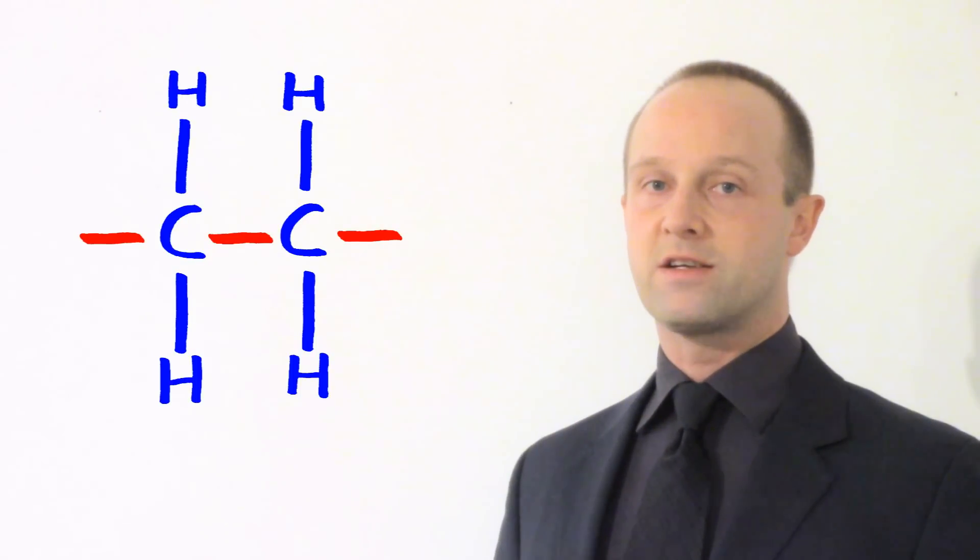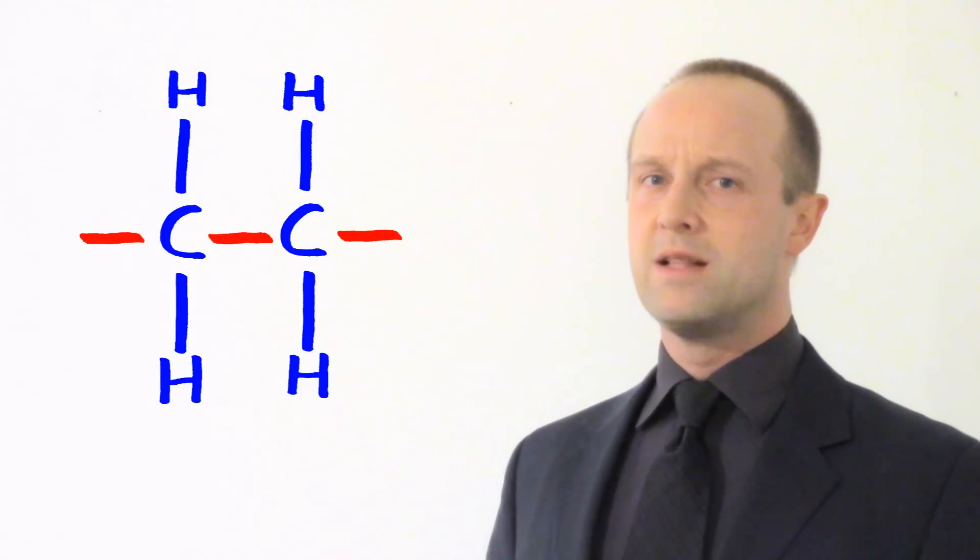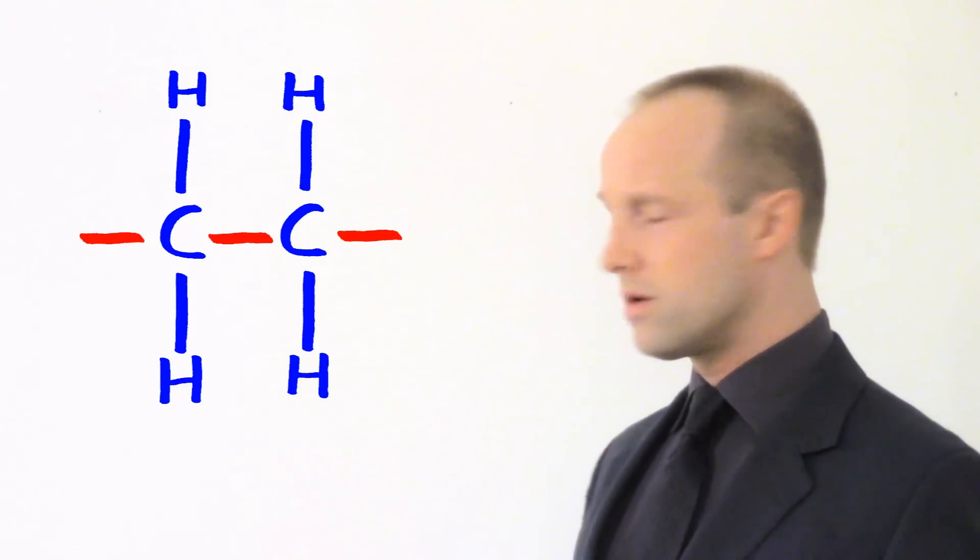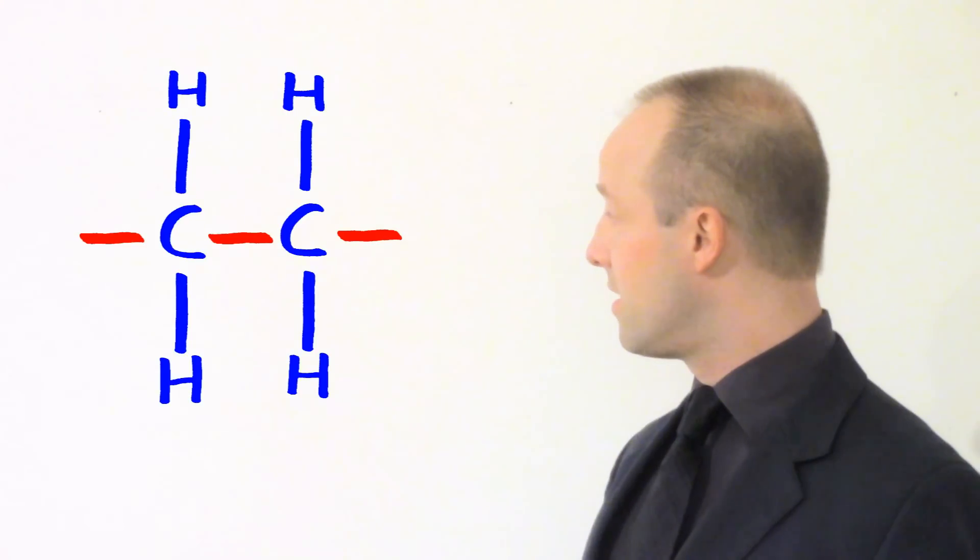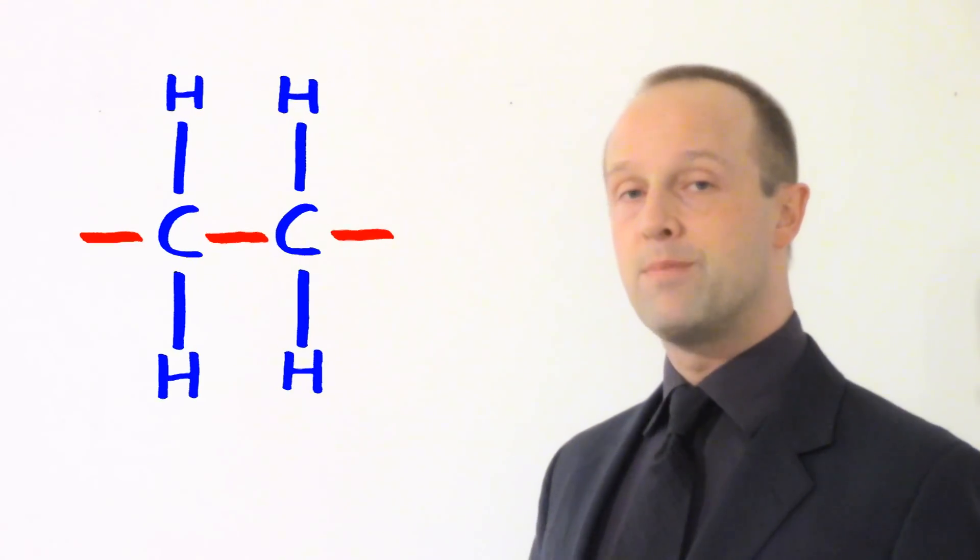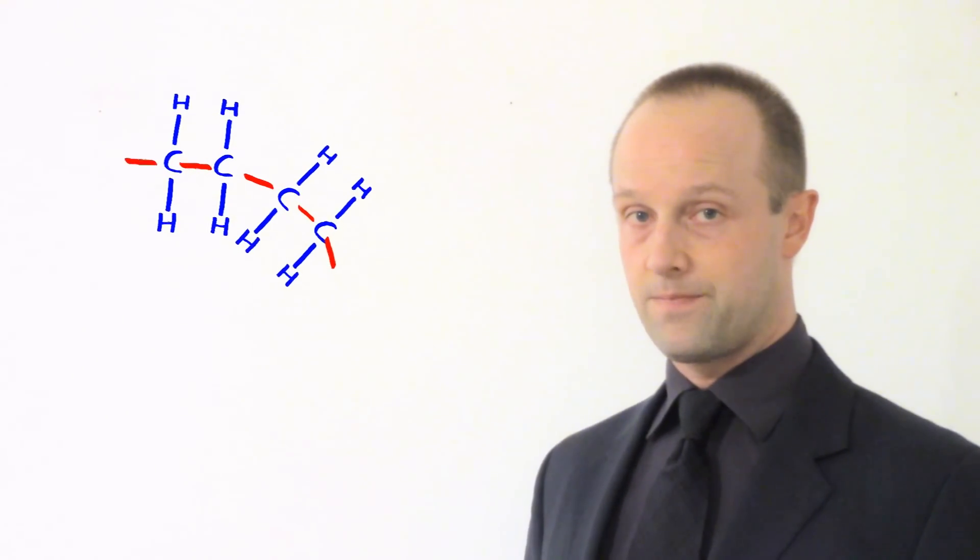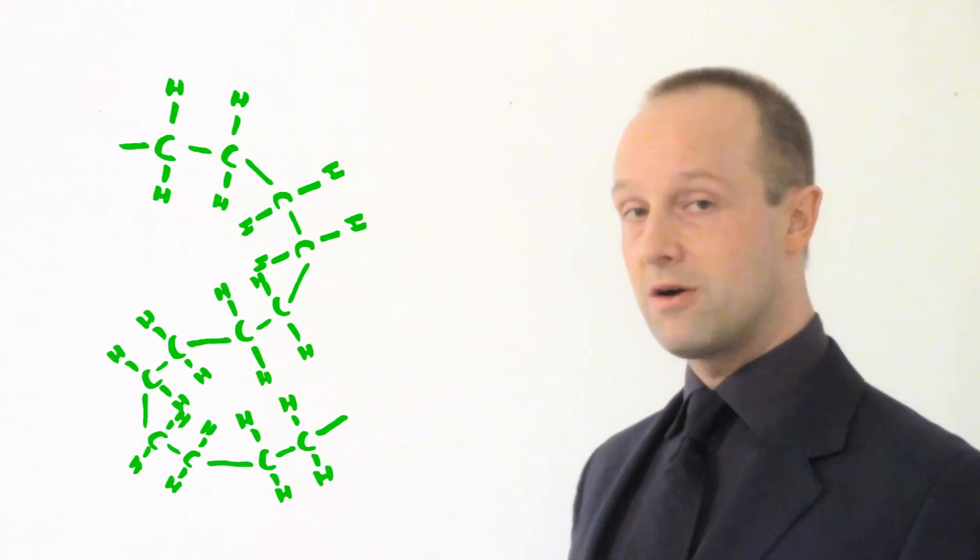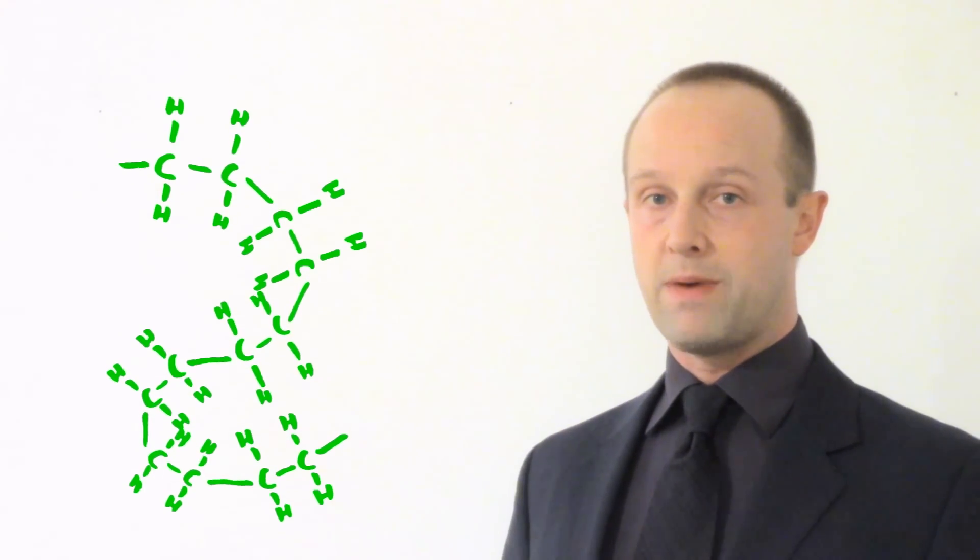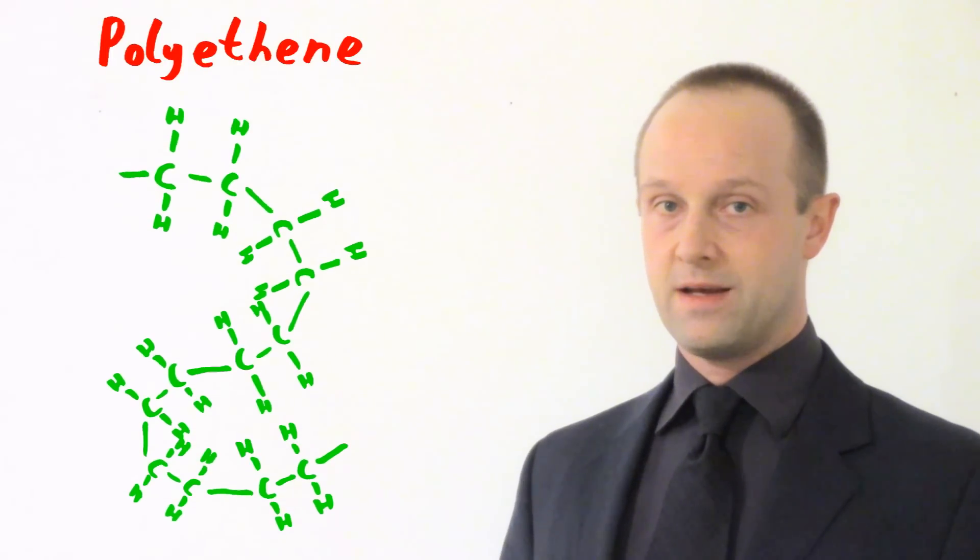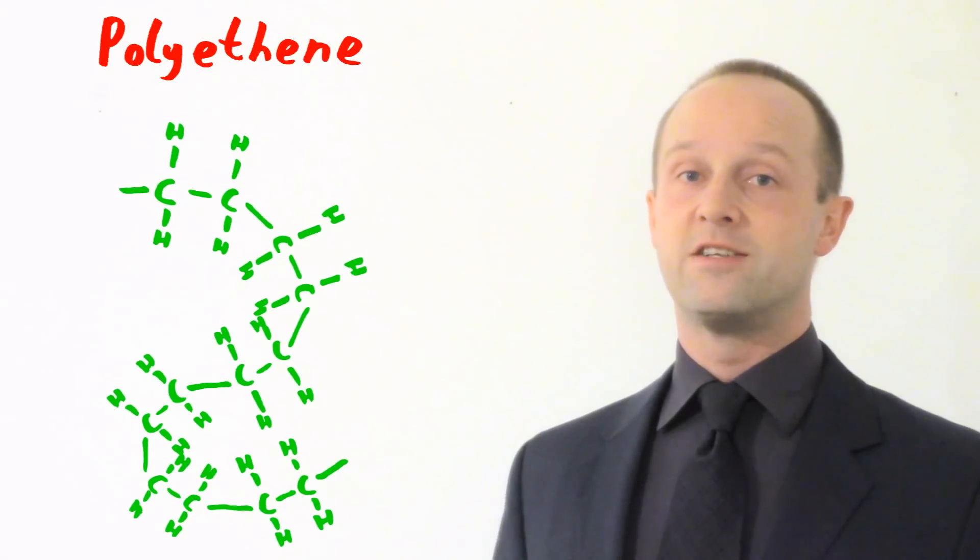Now, when we do this reaction, we'll do the reaction with countless billions of ethene molecules. And there'll be loads of them which have also had their double bond broken open in the same way. So, our single ethene molecule, if it bumps into another ethene molecule, can then join onto it. It can form a new bond. And we get a huge long chain of these ethene molecules all joining onto one another. And they form a compound called polyethene.